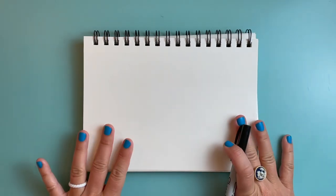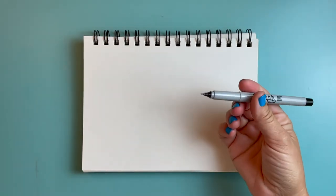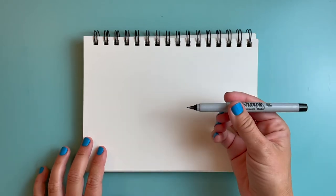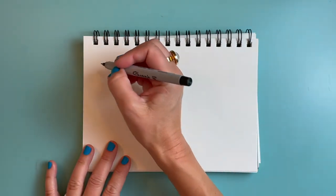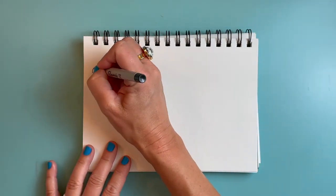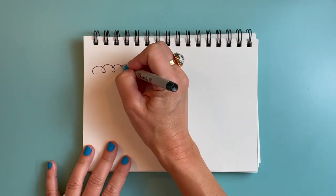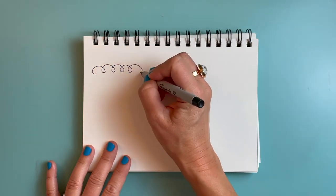Now you might want to practice drawing some curly lines first. You can use a pencil or a pen, a crayon, or marker. I'm going to be using this black permanent marker. So I'm going to start off just practicing drawing some curly lines.